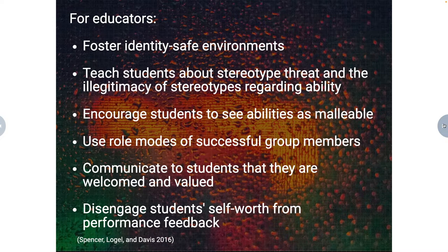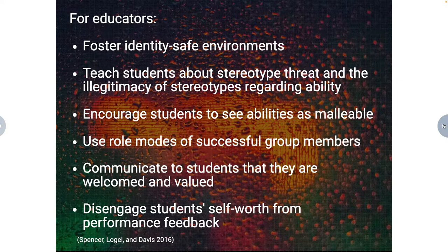There are a lot of recommendations for educators. Fostering identity-safe environments and teaching students about stereotype threat and the illegitimacy of stereotypes regarding ability are key. Encouraging students to see abilities as malleable rather than innate is really important because it helps students move away from the idea that one group of people is innately good or bad at a particular subject. Using role models of successful group members can be very valuable. Making all students in your class feel like they belong there is important. And trying to help students disengage their self-worth from their performance feedback matters — so they don't consider doing poorly on a test as an indicator of their worth as a person.